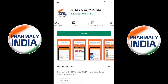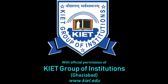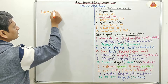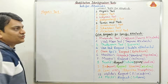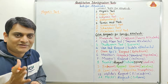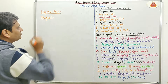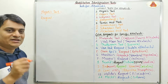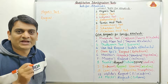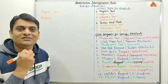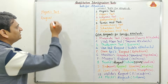Coming to the Hager's test. First I will discuss the details about the reagent. Hager's reagent is the saturated solution of picric acid - we will make a solution of picric acid and the solution should be completely saturated.